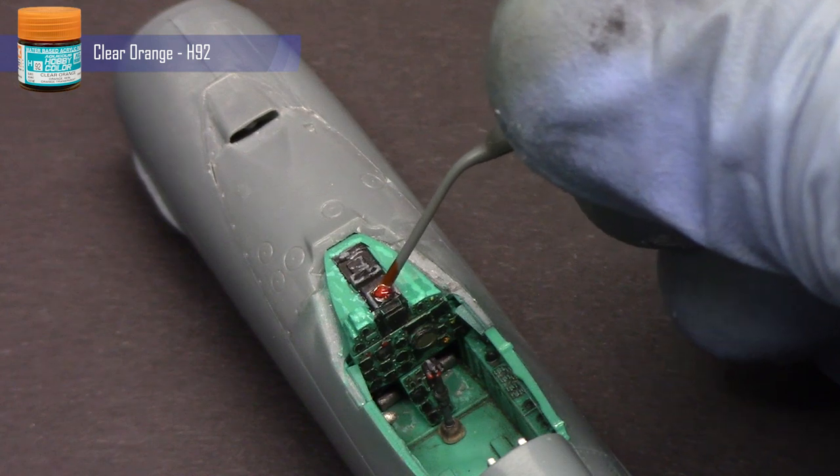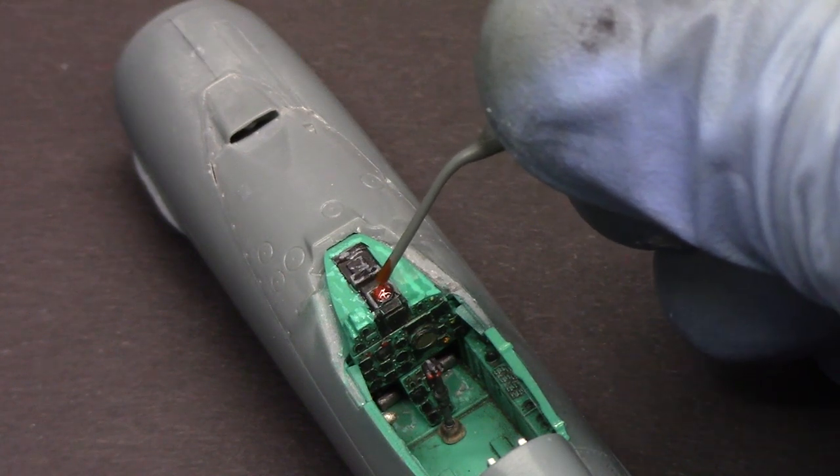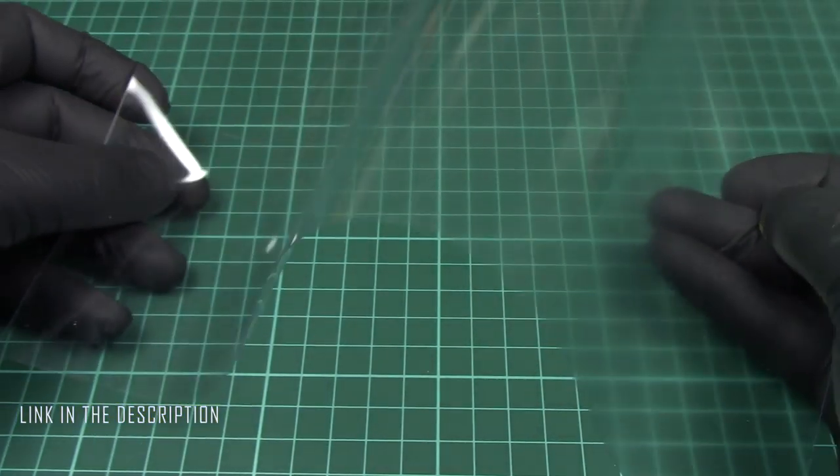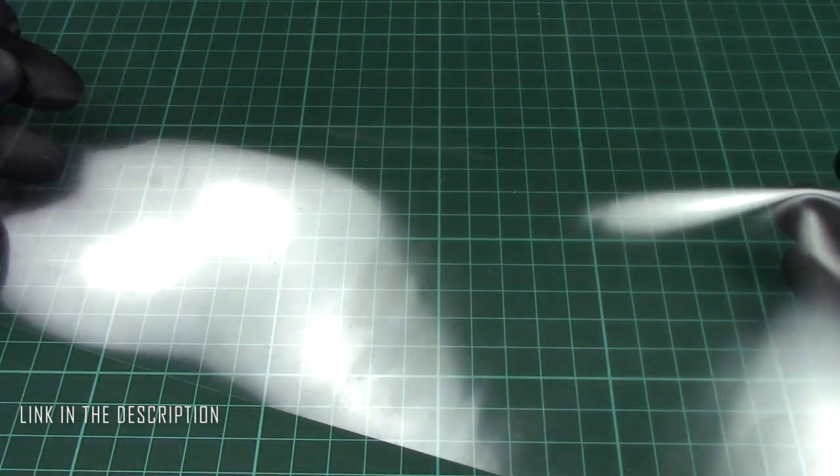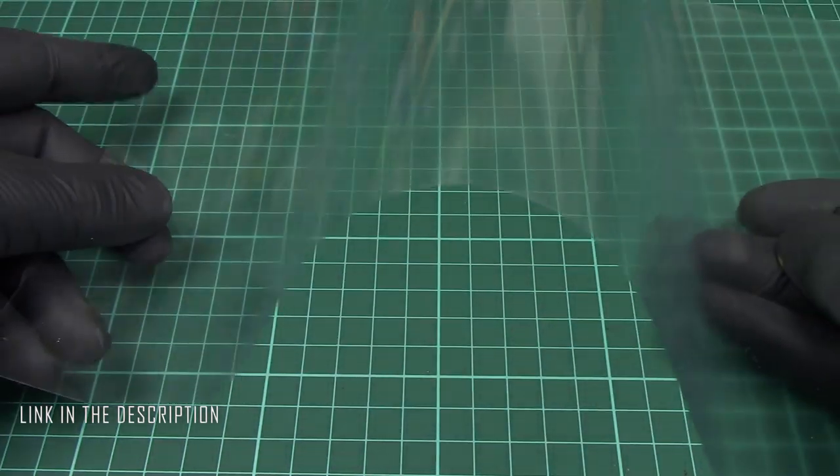Then I add a layer of clear orange, but check your references for the correct color. For the screen I am going to use acetate sheet as it has much better thickness than the kit part.